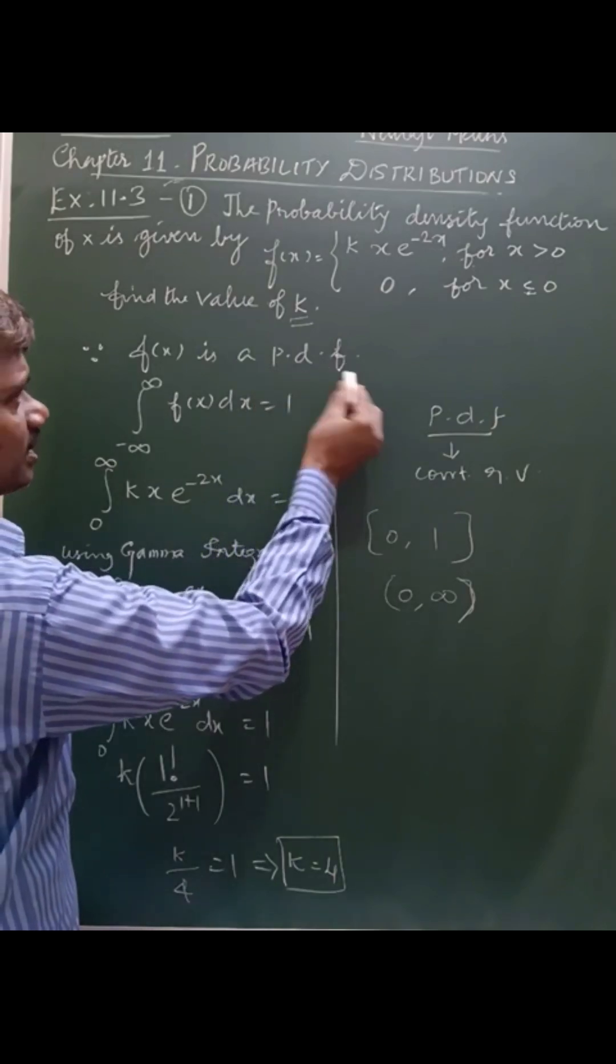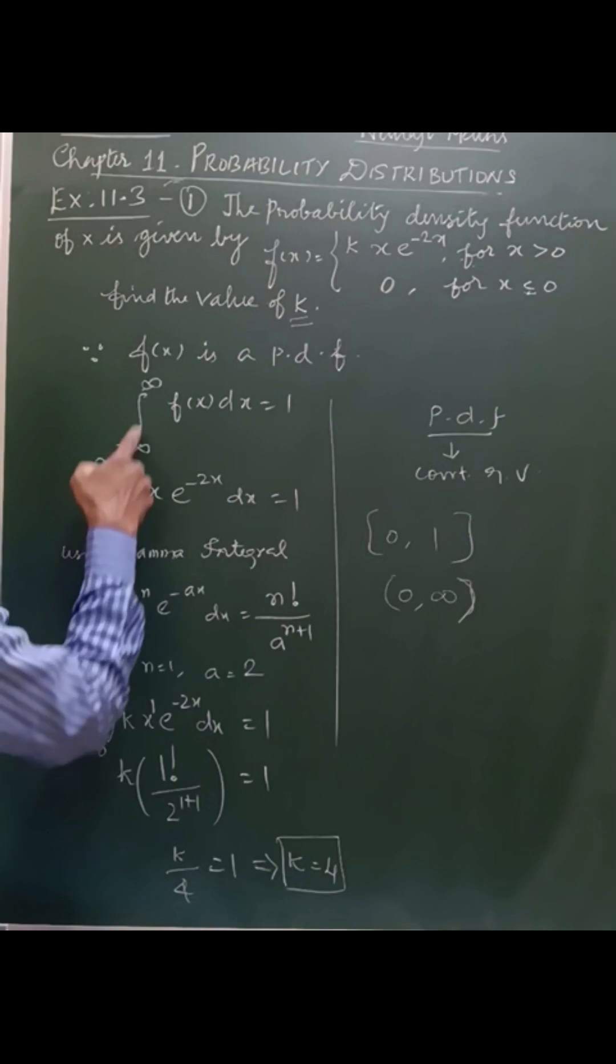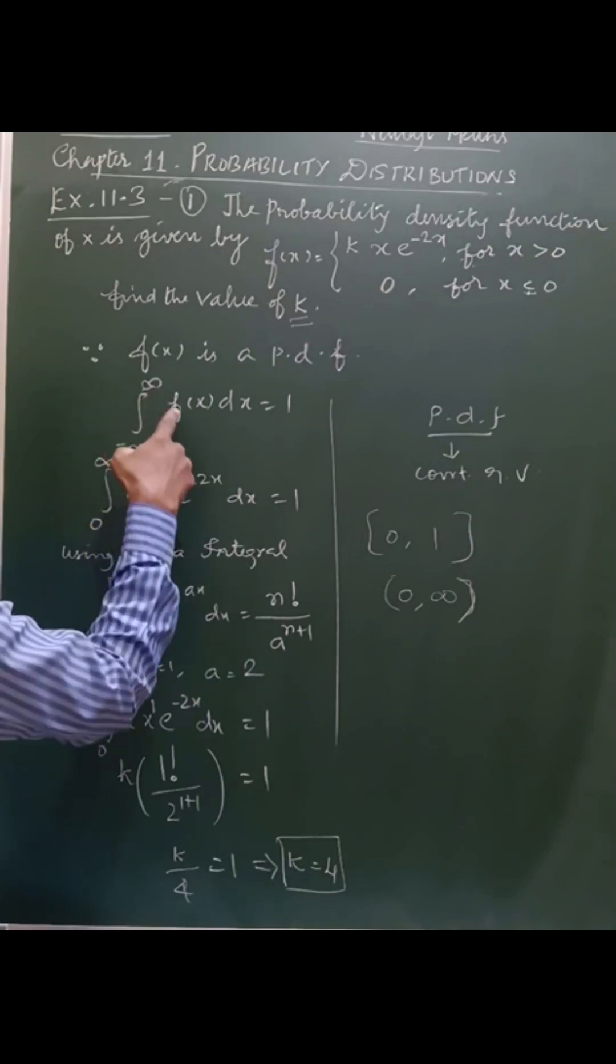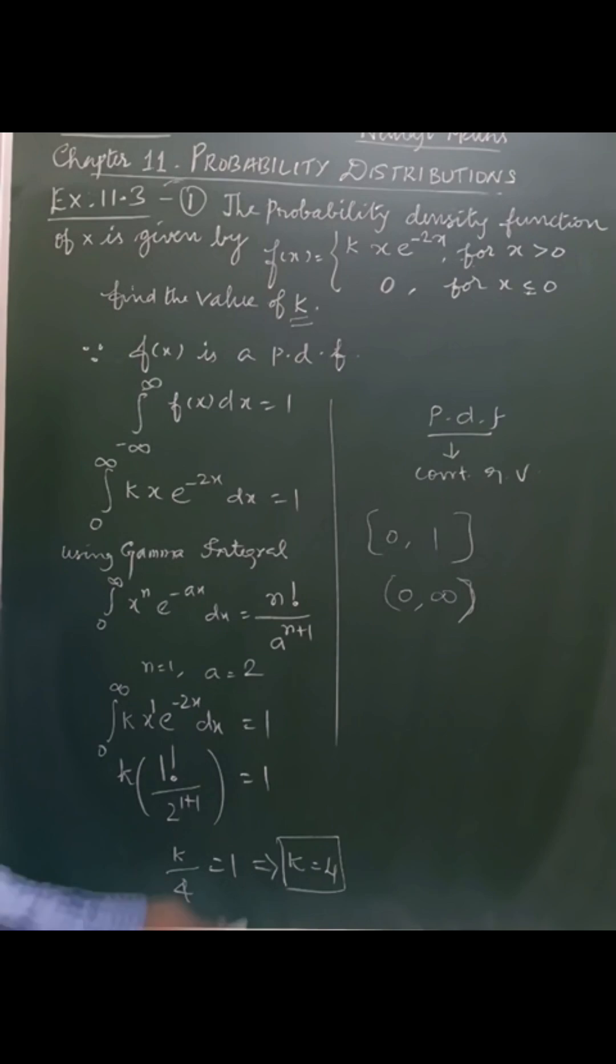For probability mass function versus probability density function, you can see probability density function uses the integral. Integral minus infinity to plus infinity f of x dx equal to 1. This is the formula for the probability density function.